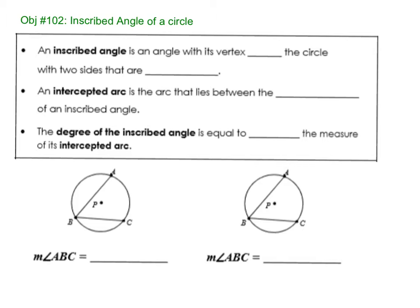An inscribed angle, if you look at the pictures at the bottom, is an angle with its vertex on the circle with two sides that are chords. So the angle, the vertex is on the circle, and then we have two chords. So those two points are also on the circle.